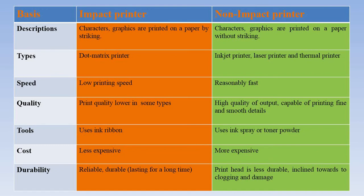In impact printers, characters and graphics are printed on paper by striking. There is a striker, and when we press it, it activates and clicks on the paper, printing whatever graphics or character is there. But in non-impact printers, characters and graphics are printed on paper without striking. These days we are using non-impact printers. For example, a laser printer — in a laser printer, you cannot see any striker. There is a laser beam that moves across and our paper gets printed.